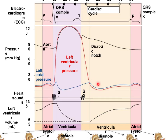Now that atrial pressure is higher than ventricular pressure, you get passive filling. Once the atria have built up enough blood and pressure, they contract and push blood into the ventricle, causing AV valve closure again — S1 sound — then isovolumic contraction, aortic valve opening, driving blood into the aorta, closure of the aortic valve, isovolumic relaxation, and opening of the AV valves.